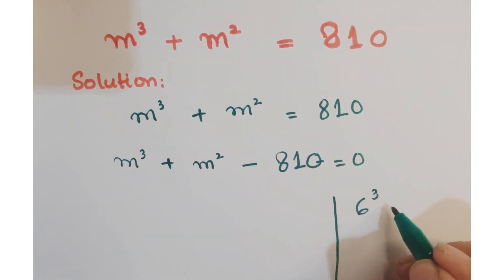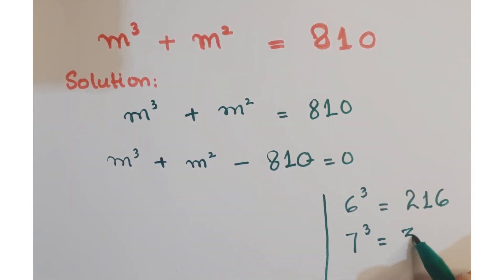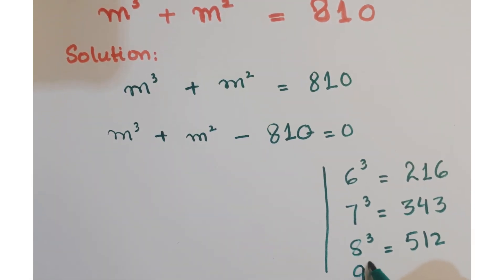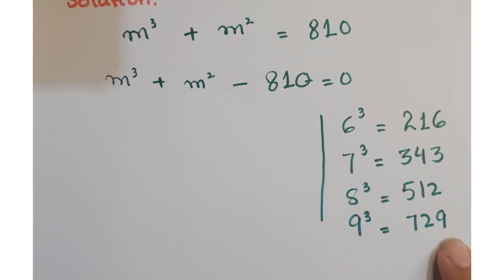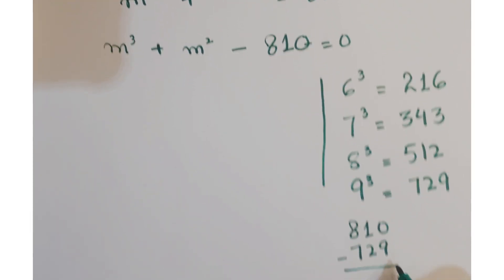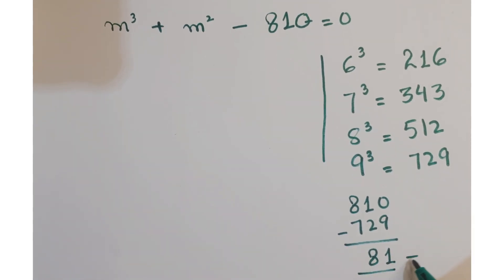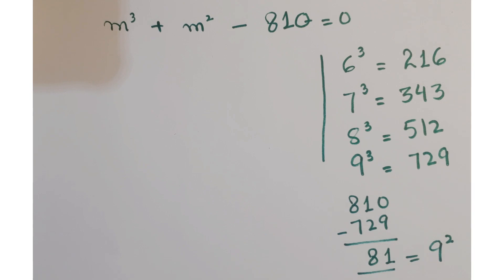Let's check. 6³ = 216, 7³ = 343, 8³ = 512, and 9³ = 729. Now, 9³ = 729 which is nearest to 810. So if we subtract 729 from 810, we get 81, and 81 is a square of 9. So we can split this 810 into 729 and 81.